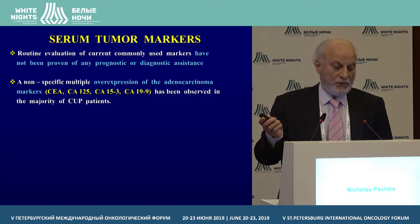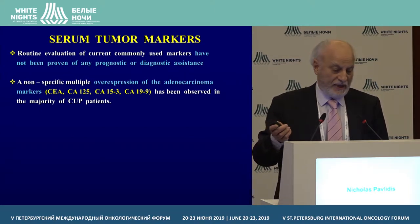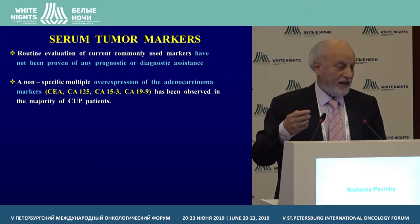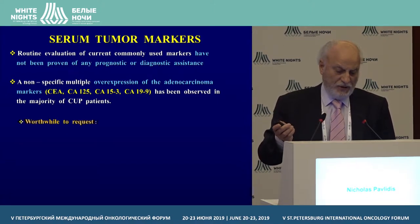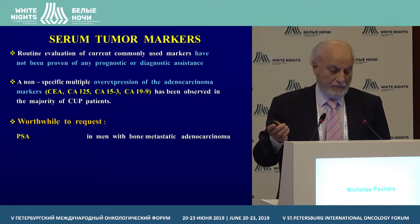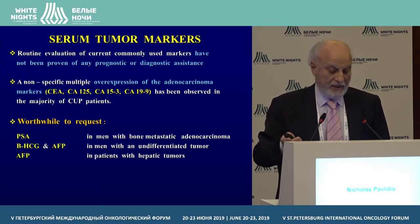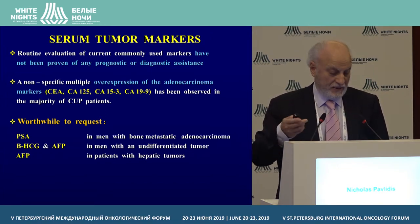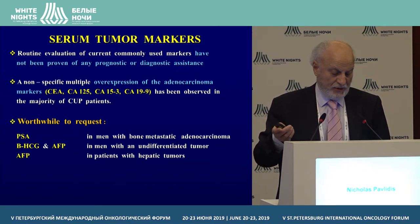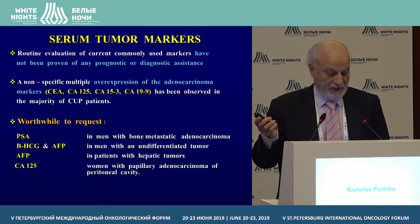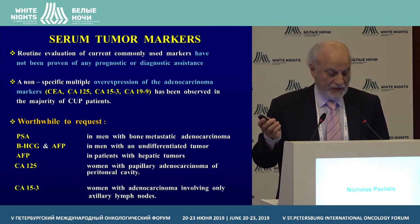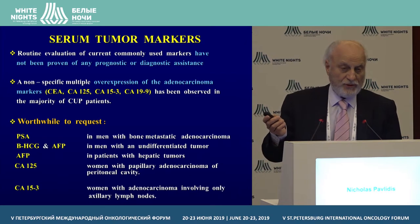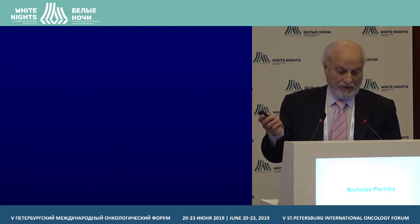Then we move to serum tumor markers. Please don't overdo this, because they do not have any significant prognostic, diagnostic, or predictive value. But you do it sometimes — for example, in patients with bone metastatic adenocarcinoma, you do a PSA. If you have a young man with undifferentiated tumor, you do BHCG and AFP. For hepatic tumors, you do AFP. For ladies with adenocarcinoma of the peritoneum, do CA-125, and CA-15-3 for patients with adenocarcinoma involving the axillary nodes.